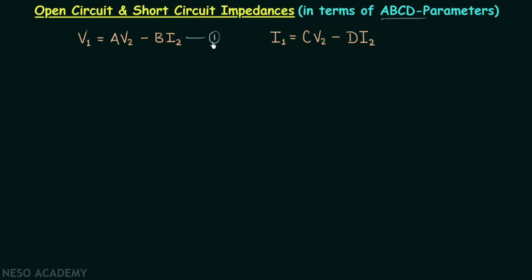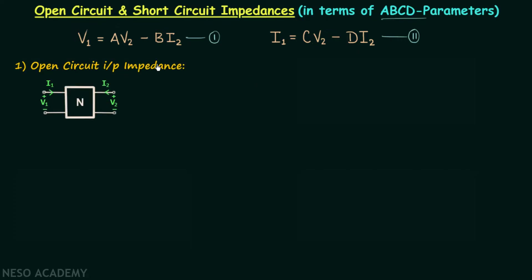This is equation number 1 and this is equation number 2. The first impedance we will find out is the open circuit input impedance. By open circuit we mean we are going to open circuit the output port, and therefore current I2 will be equal to 0. We are finding out the input impedance — the impedance when looked from these two terminals — and I will represent this impedance as Z sub OI. We know that Z sub OI will be equal to V1 over I1, with the defined circuit condition that I2 should be 0.